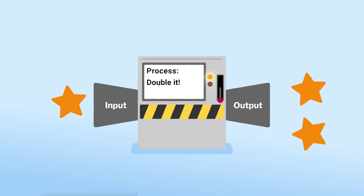Work with them to understand the importance of precision and that the computer will only do what it is told. The process could be 'double it' or 'add one.' Think of some ways to adapt this activity.